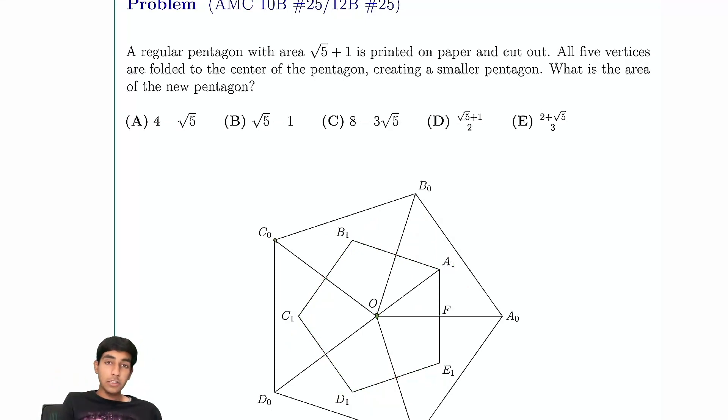So in order to find the ratio of the areas, notice that let's call that distance x. It's midpoint, so that's also x. We want to find the ratio of this distance, x, to the altitude in triangle OC0D0.